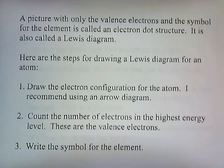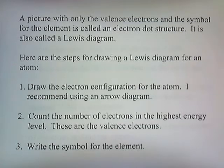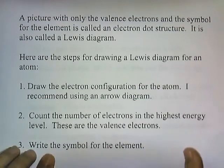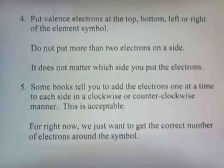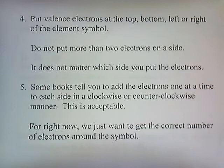A picture with only the valence electrons and the symbol for the element is called an electron dot structure — also called a Lewis diagram. Here are the steps for drawing a Lewis diagram for an atom: One, draw the electron configuration for the atom — I recommend using an arrow diagram. Two, count the number of electrons in the highest energy level; these are the valence electrons. Three, write the symbol for the element. Four, put valence electrons at the top, bottom, left, or right of the element symbol — don't put more than two electrons on a side. It doesn't matter which side you put the electrons on.